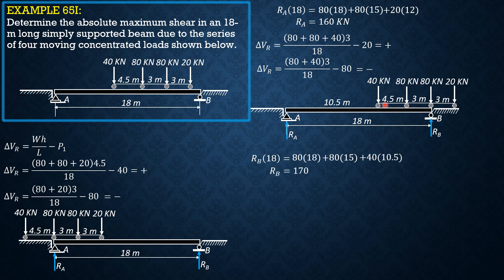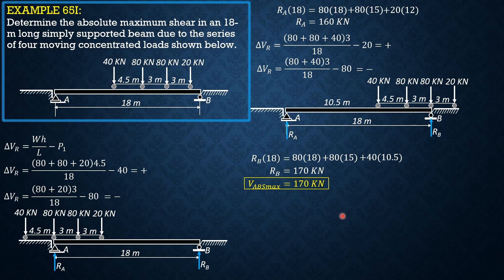Rb therefore is equal to 170 kilonewtons. Since this is greater than 160, this is the absolute maximum shear. So absolute maximum shear is 170 kilonewtons.